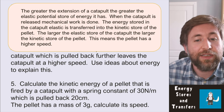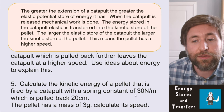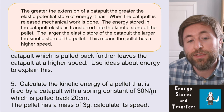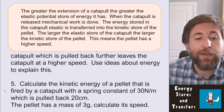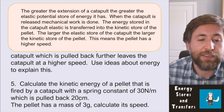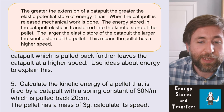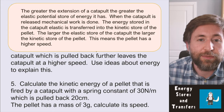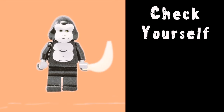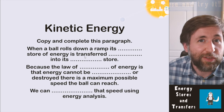Next: calculate the kinetic energy of a pellet fired by a catapult with a spring constant of 30 N/m, pulled back 20 cm — note that's not in SI units — and a pellet mass of 3 g, also not in SI units. Pause the video, copy and complete the calculation to check you've got what you're supposed to get from this video.